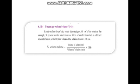Next: percentage volume by volume. It is the volume in cubic centimeters of a solute dissolved per 100 cubic centimeters of the solution. For example, 30% alcohol solution means 30 cm³ of alcohol dissolved in sufficient amount of water so that the total volume of the solution becomes 100 cubic centimeters.